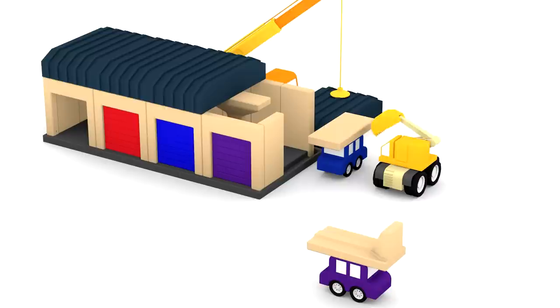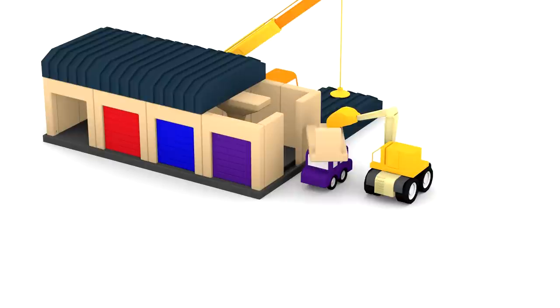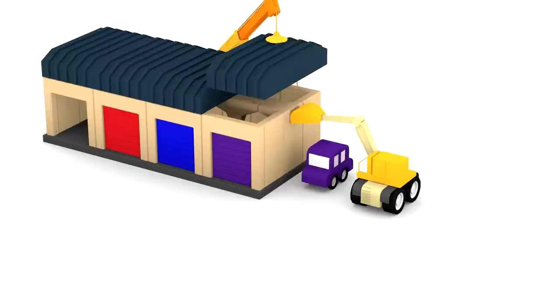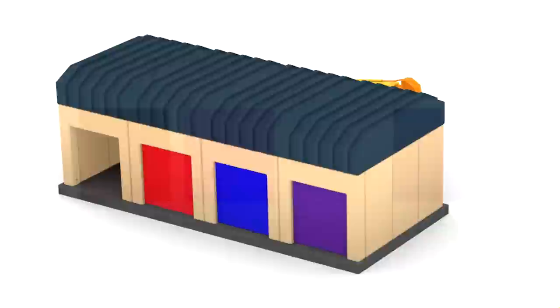The blue car and purple car brought some pieces to make the walls. Our garage building is almost ready, but we are missing a colour door. Can you see which one?